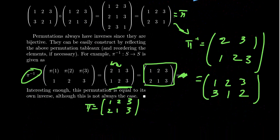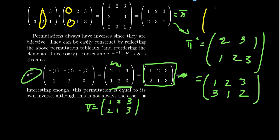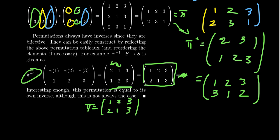Alternatively, you can compute compositions inline without writing the full three-row tableau. For example: 1→2, then 2→2, so 1→2. Next: 2→1, then 1→3, so 2→3. And: 3→3, then 3→1, so 3→1. Similarly for inverses: if 1→2, record 2→1; if 2→1, record 1→2; if 3→3, record 3→3. You can build the inverse in order by scanning through the tableau first.